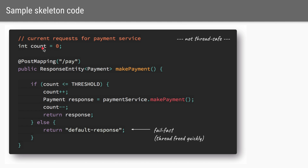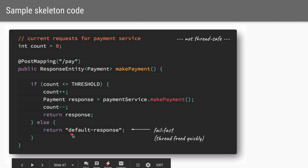Here we initialize a counter to track the number of concurrent requests currently being made for the payment service. We will also have similar counters for the cart service and inventory service. Whenever someone makes a call to the order service using slash payment, this method will be called. We first check if the current number of concurrent requests is less than the threshold — in our case, three. If so, we are allowed to make the call to the payment service. Before making the call we increment the count, and after the call we decrement it. If the payment service is slow, the count will exceed the threshold and we simply return a default response without blocking the thread.